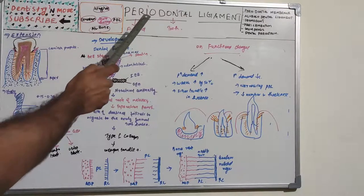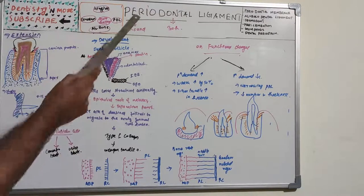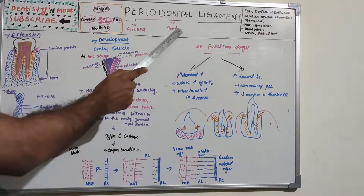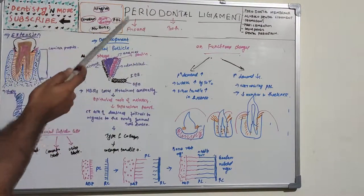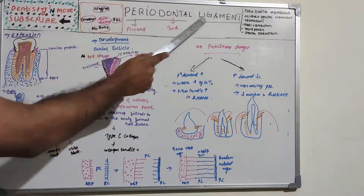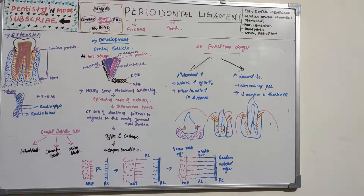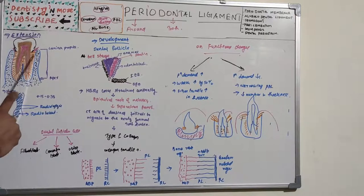The name itself gives an idea: 'peri' means around and 'dont' means tooth, so periodontal ligament is the ligament surrounding the tooth. It is one of the four components of periodontium. It is defined as a connective tissue that surrounds the root and connects it to the bone. This orange color in the diagram represents periodontal ligament.